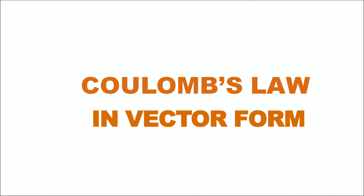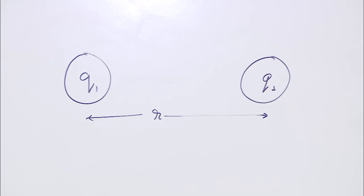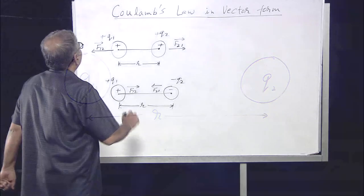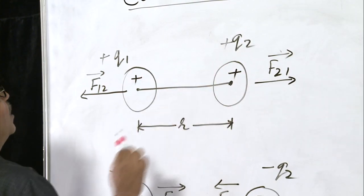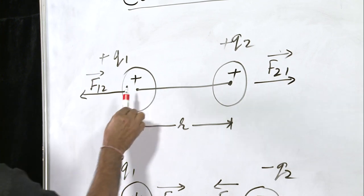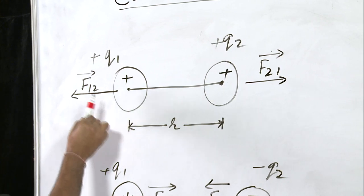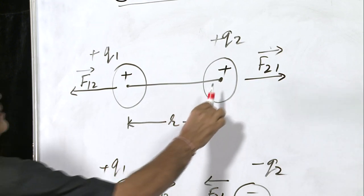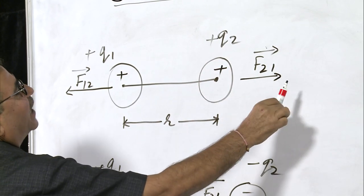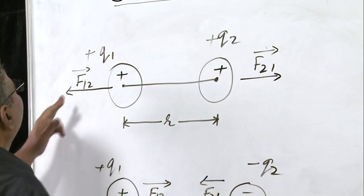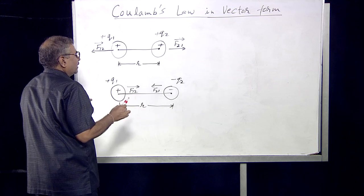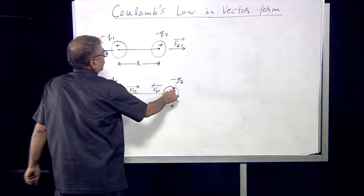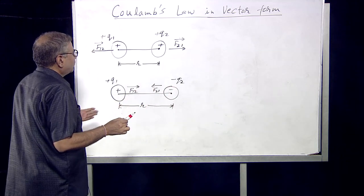Now we will explain Coulomb's law in the vector form. Let there be two point charges Q1 and Q2 separated by a distance R. Looking at the figure, this is charge plus Q1 and this is charge plus Q2. The force on charge one due to charge two is directed from right to left, and the force on charge Q2 is directed from left to right. So F12 and F21 are in opposite directions.